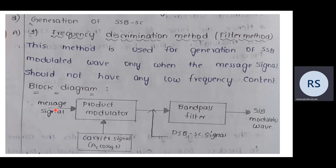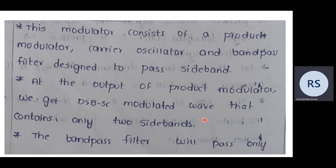In the block diagram, the message signal is modulated with the carrier signal to produce a DSB-SC output. This DSB-SC output from the modulator then passes through a bandpass filter, and the output of that filter is the single sideband modulated wave. This is how SSB is generated using the filter method with a bandpass filter.